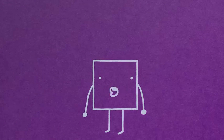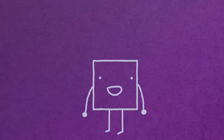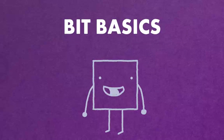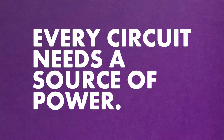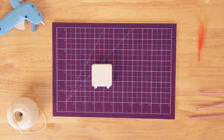First, we need to learn how little bits work, so let's explore some bit basics by building a circuit together. Every circuit needs a source of power, so let's start by getting power from our battery to our bits.